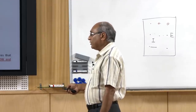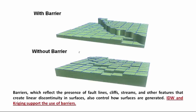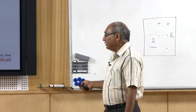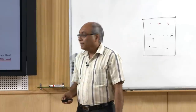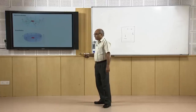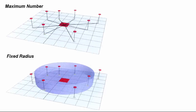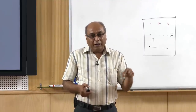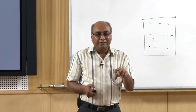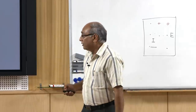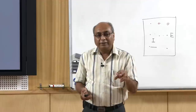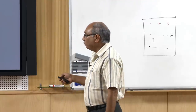Barriers reflect the presence of fault lines, cliffs, streams, and other features that create linear discontinuity in surfaces and control how surfaces are generated. Regarding the search radius: you can use either a maximum number of points — say 12 points in the neighborhood — or a fixed radius, where whatever number of points fall within the radius will be used to calculate the value.